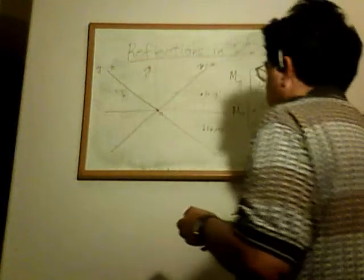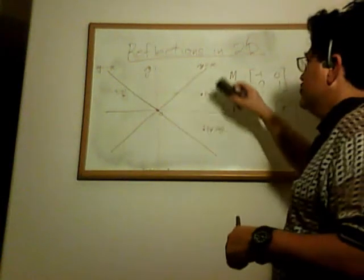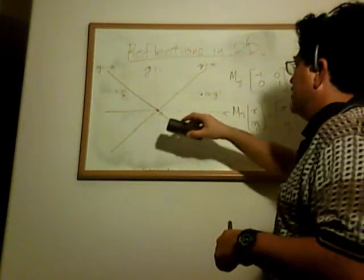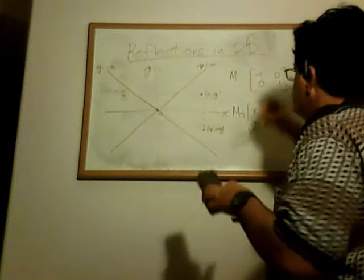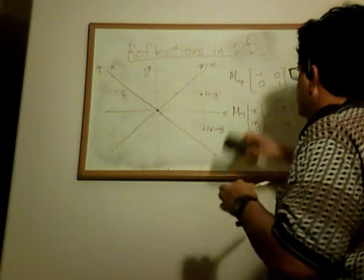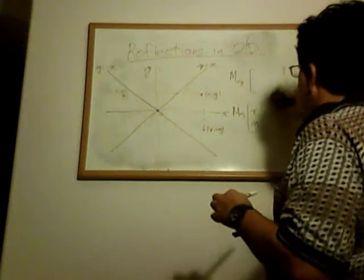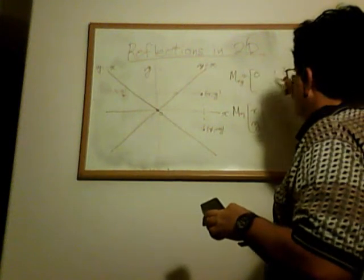Okay, alright. So then there's two others I'm going to talk about. There's a reflection about the line y equals x, and I'll call that Mxy. And what that looks like is 0, 1, 1, 0.